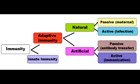We have already talked about innate and adaptive immunity. Now let's talk about passive and active immunity. Passive immunity, as the name suggests, is immunity that is passed from one person to another — one person is given the antibodies of another person.